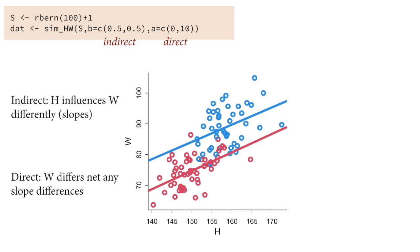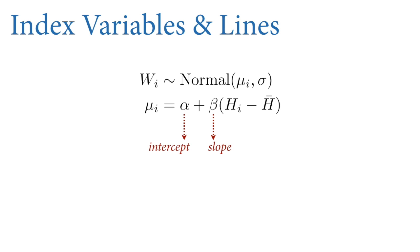To develop a statistical model estimating that direct effect, we augment the previous model — the one that estimated the total causal effect — by adding height as a variable in the regression. This allows the model to ask: for individuals of the same height, what are the differences by category? We start with the regression of weight on height from the previous lecture and add sex. One change I've made is centering: the term multiplying beta is (H_i − H̄), where H̄ is the average height in the population.